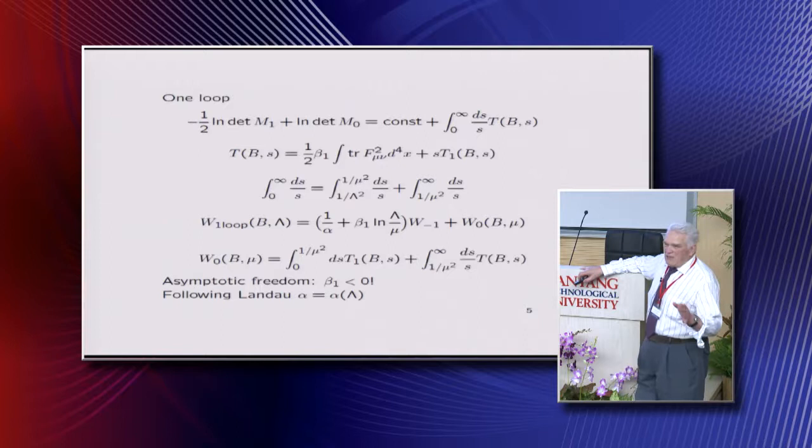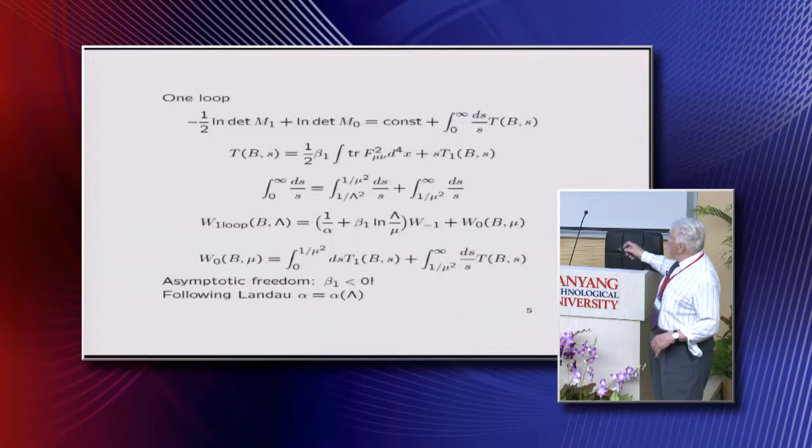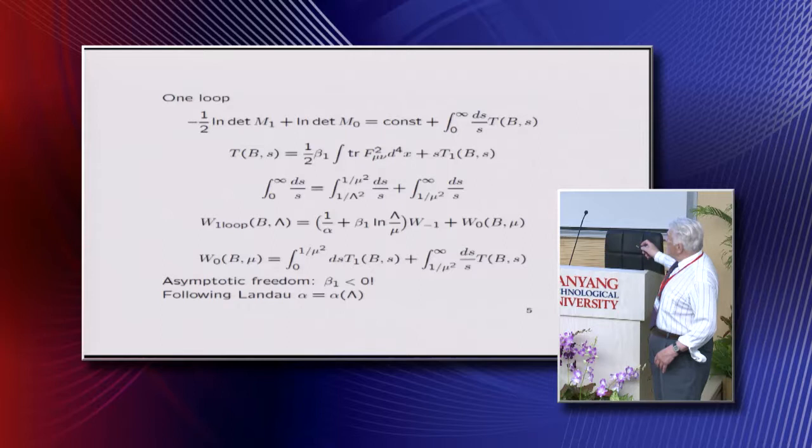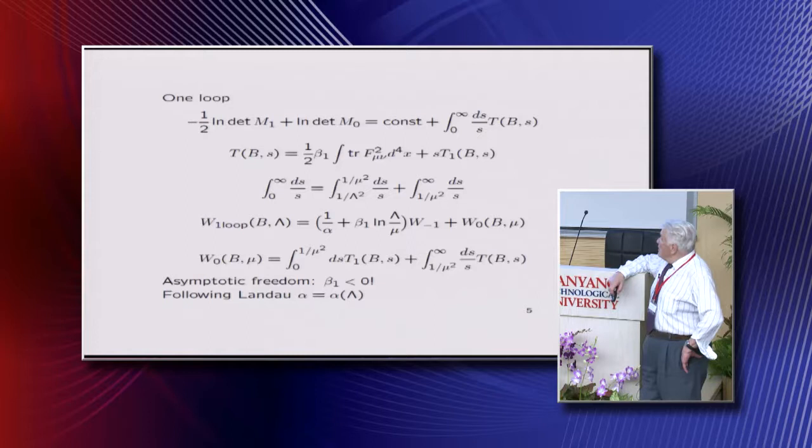But then it happened that in Yang-Mills field this coefficient is negative. This is a famous result of Gross and Wilczek, Politzer, and 't Hooft also. Maybe it's not so much known, but 't Hooft around the same year, 73, had this statement also. And so with this, we see that divergent part of one-loop effective action is one over alpha plus beta_1 log lambda over mu, and then finite term.